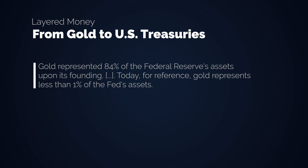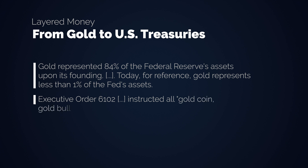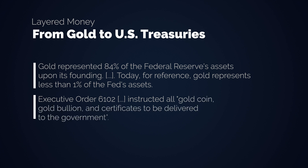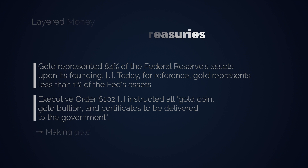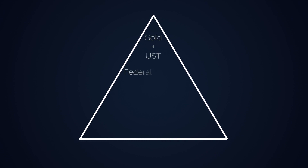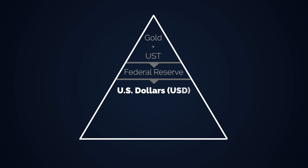In 1933, Roosevelt ordered what the Bank of Amsterdam ordered 300 years earlier. Executive Order 6102 instructed all gold coin, gold bullion and certificates to be delivered to the government, thereby eliminating people from first layer money, making it illegal with up to 10 years in prison. So at this point, the pyramid basically had gold and US Treasuries at the top, followed by the US Dollar and second layer money.